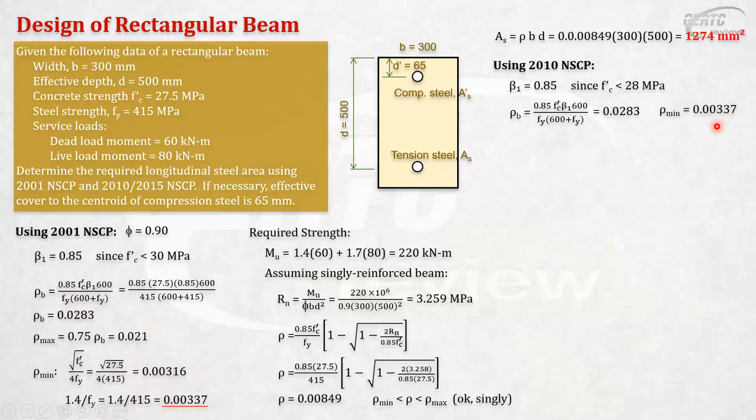Okay? But, we don't have rho max. We won't use this anymore. That's not in 2010 or 2015. Although, there is a limit on the steel strain 0.004. But, it was not stated as rho max in that code. Unlike here, it's really stated in the code as maximum.